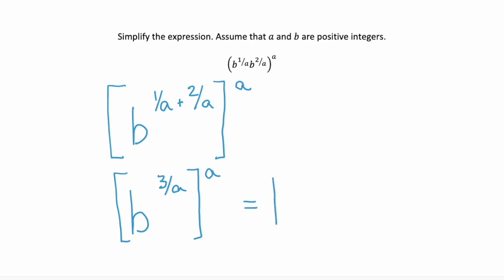Which means we have this base, b, to the power of 3 over a, and we multiply it by this outside exponent, which is a, or a over 1. And when we multiply that, we get b.